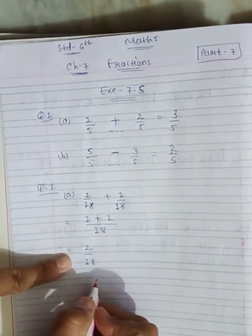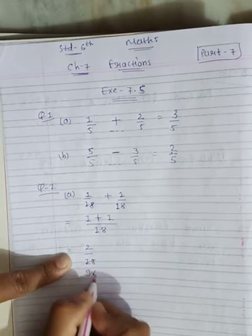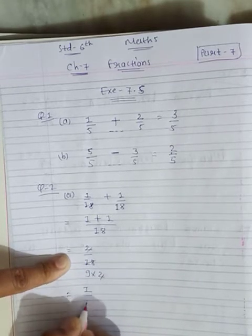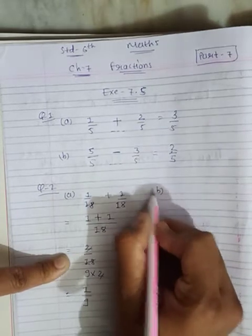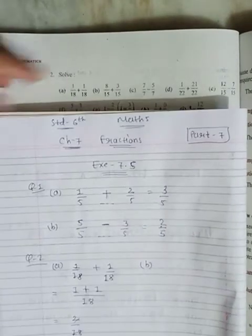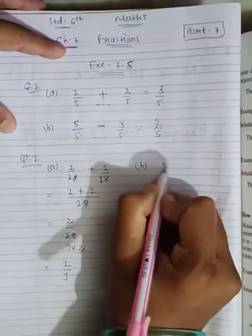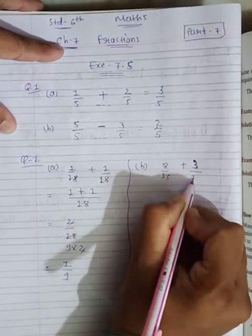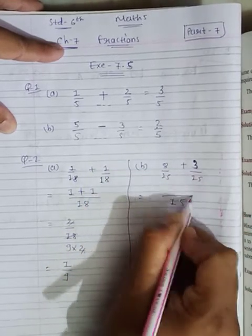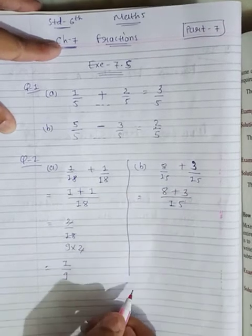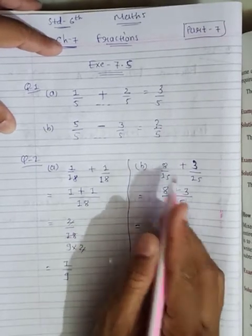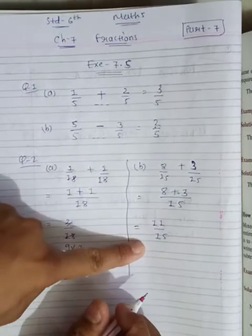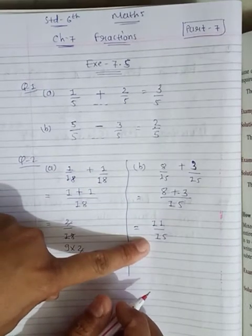One plus one is two, so the answer is two upon eighteen. Now simplify: cut it — two upon eighteen simplifies to one upon nine. Write the answer in simplest form only after getting the answer; don't cut before. So the answer is one upon nine. For part B: eight upon fifteen plus three upon fifteen. Denominator is the same, so write it one time. Eight plus three is eleven, so the answer is eleven upon fifteen. Nothing can be cancelled here.